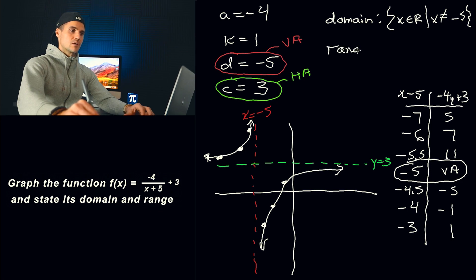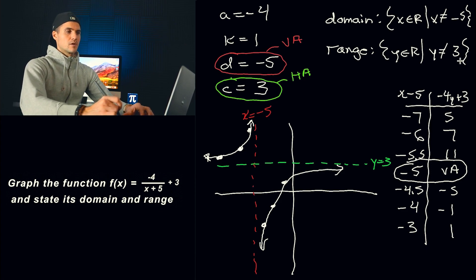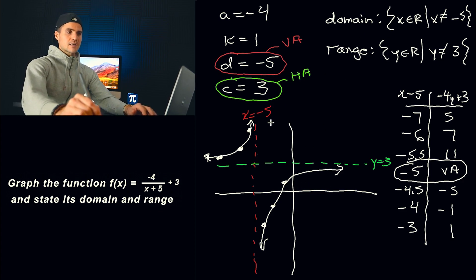Range is going to be what? y∈R. y cannot be the horizontal asymptote, which in this case is 3. All right. So you end up with the graph. Hopefully your graph looks similar to this one. And then that's going to be your domain and range. And that is the end of the video.